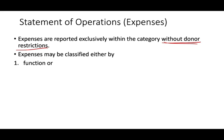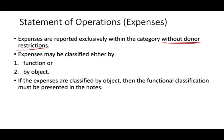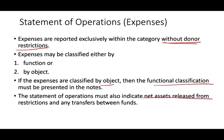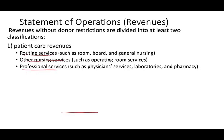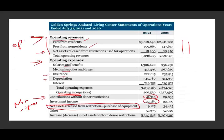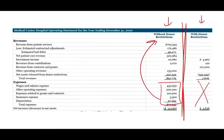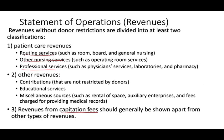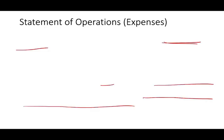Revenue without donor restriction is divided into at least two categories: patient care revenue — including routine services, other nursing services, professional services — and other revenues such as unrestricted contributions, educational services, and miscellaneous. Expenses are reported exclusively within the without-donor-restriction category. If expenses are classified by object, the functional classification must be presented in the notes. The statement of operations must also indicate net assets released from restriction and any transfer between funds.